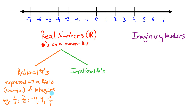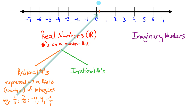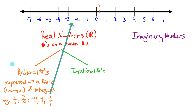Let's plot a couple of these on our number line. Where would 1 over 3 fall? 1 over 3 would fall about right here — I'll label that point as a third. I'll also plot negative 9 over 4. If we think of that as a decimal, that's negative 2.25, which would be about right here. I'll label that as negative 9 over 4.